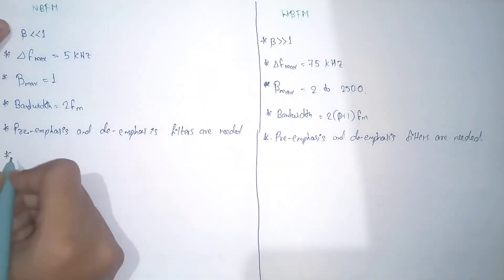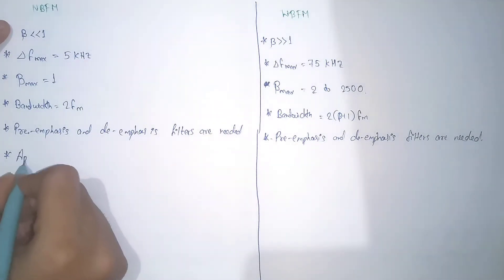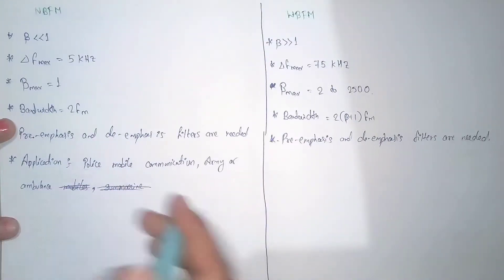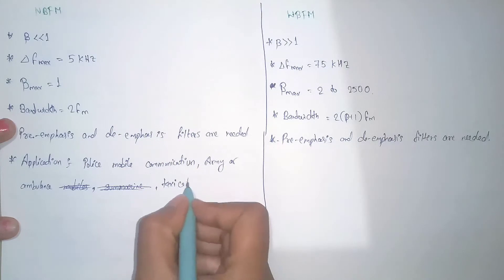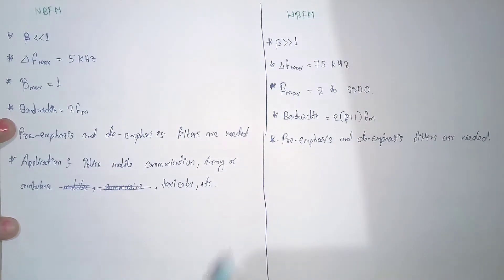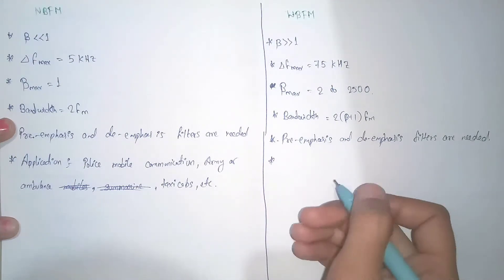And the next one we can write is the application of narrowband FM. So the application is police wireless, mobile communication, army ambulance or taxi cabs, etc. And the application for wideband FM, like FM radio or digital broadcasting.